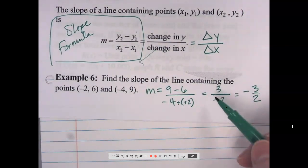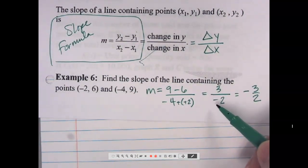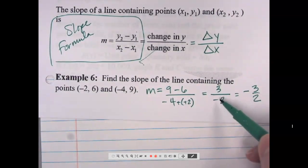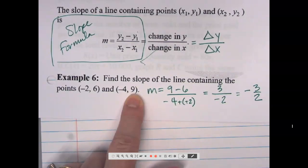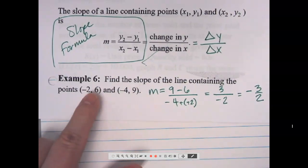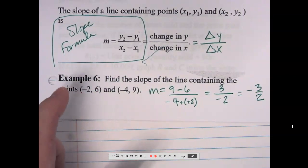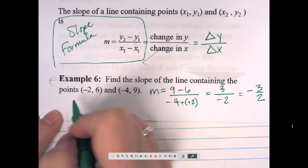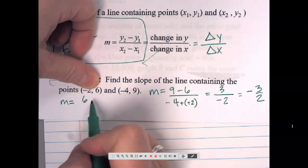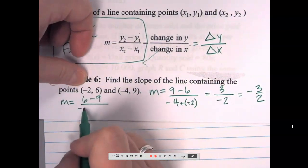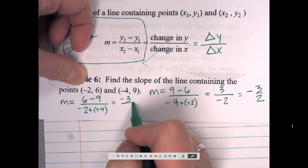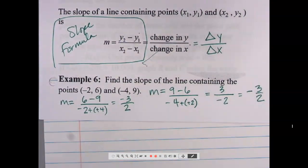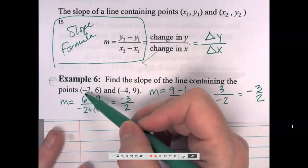The answer is negative three over two. It's fine to leave the negative in the denominator, but I usually put it with the numerator or out front so it doesn't get lost. And y-sub-two doesn't have to be the second ordered pair listed. You could flip the order — for example, 6 minus 9 over negative 2 minus negative 4 gives negative 3 over positive 2 — the same slope. You just have to draw from the same ordered pair consistently for both x and y.